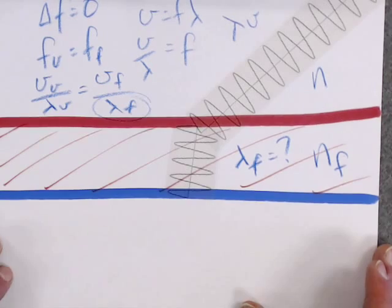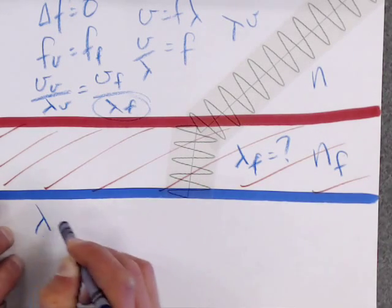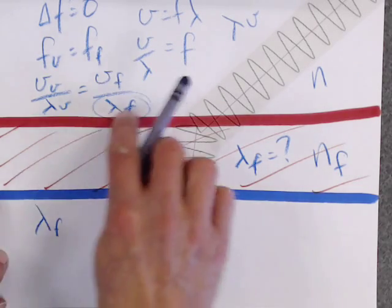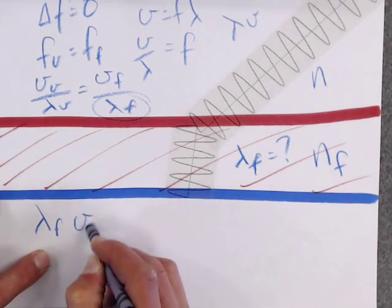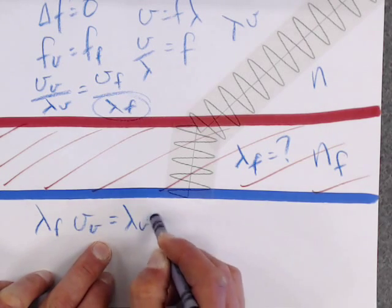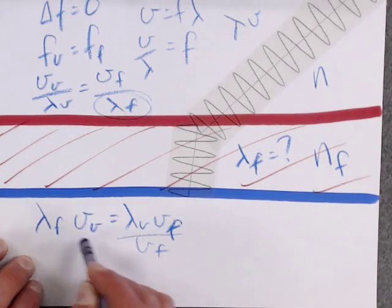So let's do a little bit of algebra here. So let's cross multiply: the lambda in the film times V in a vacuum equals lambda in the vacuum times V of the film. Divide both sides by VF.